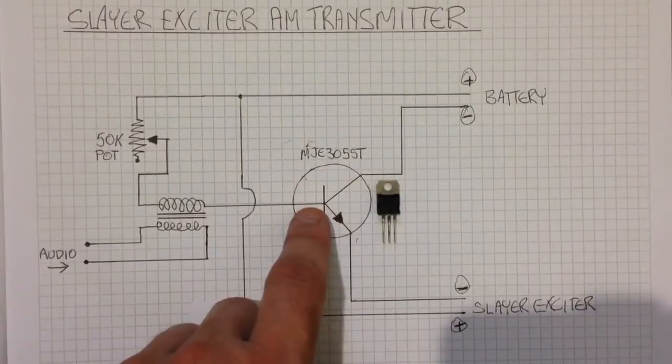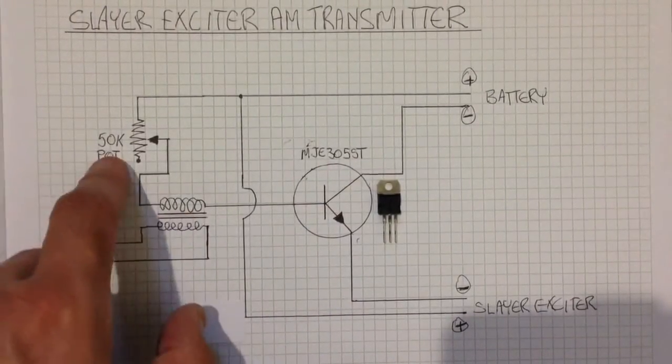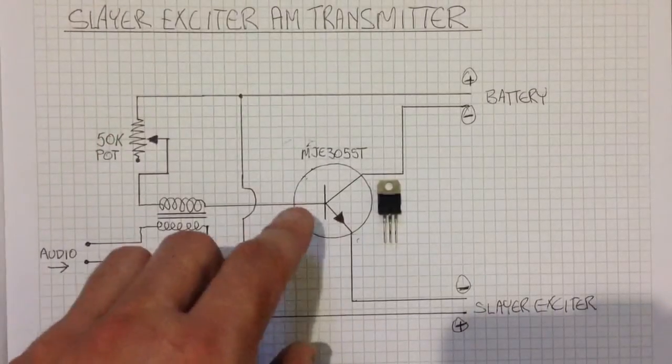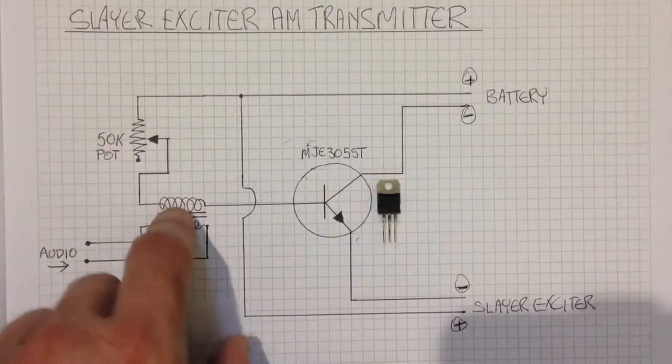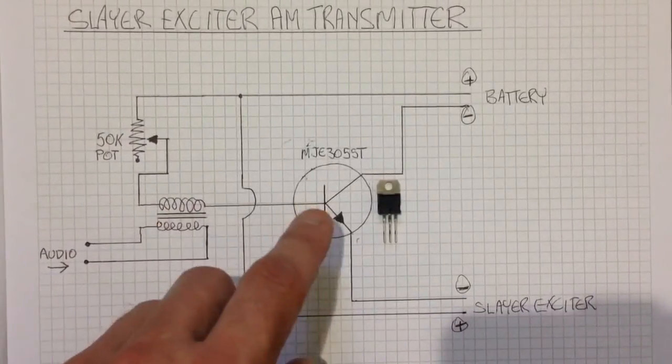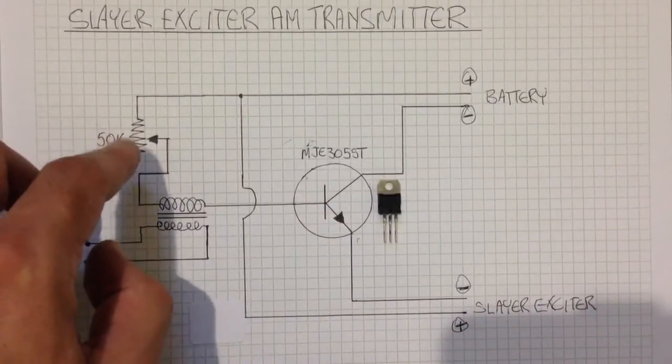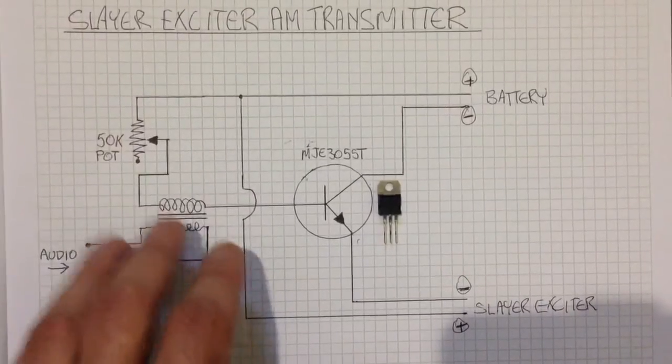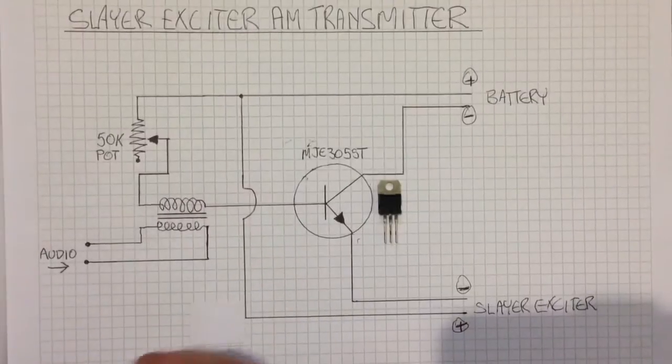So the base of the transistor is connected through a primary of a transformer to a pot through to the power supply to hold the base high. Just enough resistance, the DC side of this transformer isn't going to burn out anyway because the base isn't going to sink current. The pot is here to find the threshold where the interruption through this transformer will swing the base high and low.